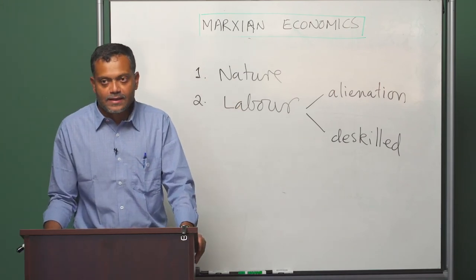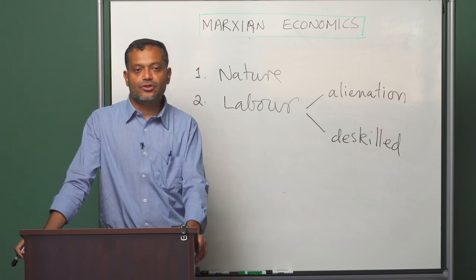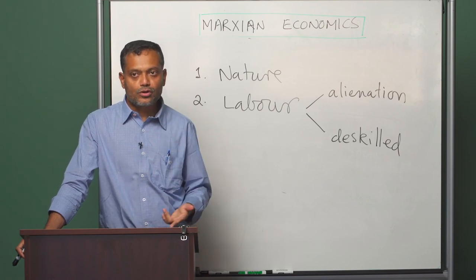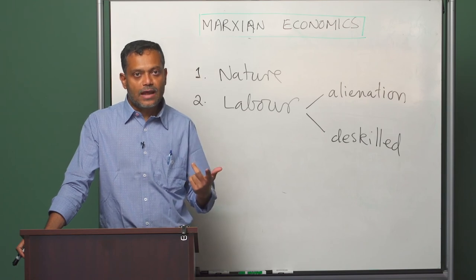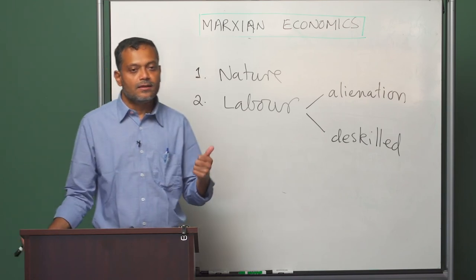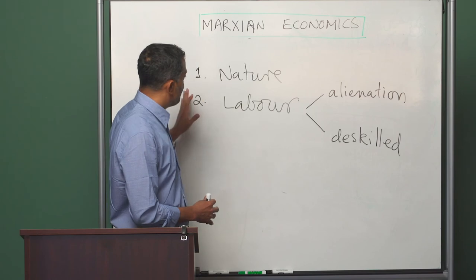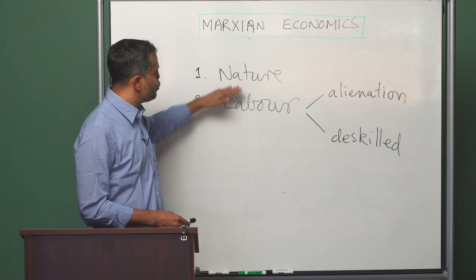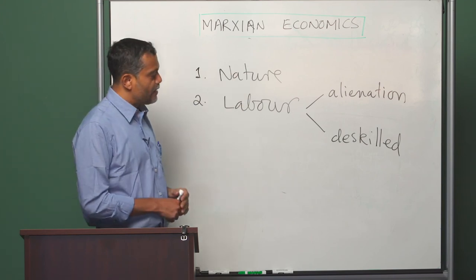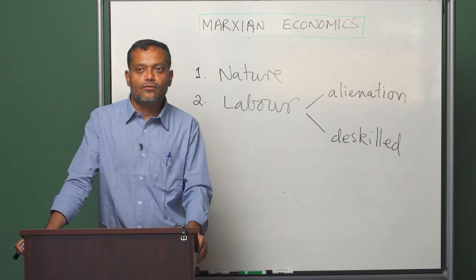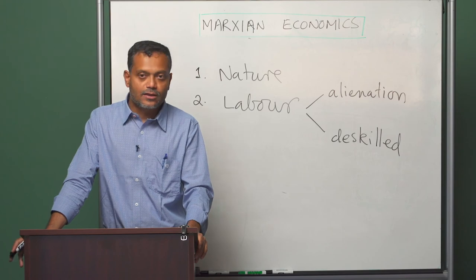To summarize, we saw two important concepts — absolute surplus value and relative surplus value — and used them to understand key features of capitalist history. We then moved on to understanding the effect of capitalist relations on the two original sources of wealth: nature and labour. With that, we end our discussion of production under capitalism. In the next segment, we will discuss the accumulation of capital.